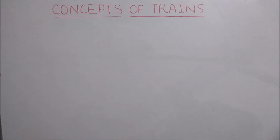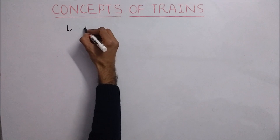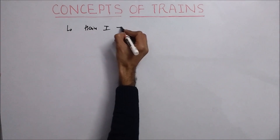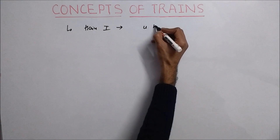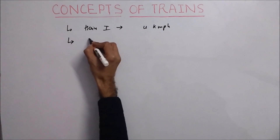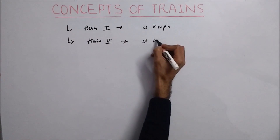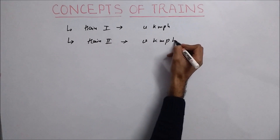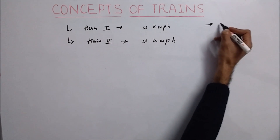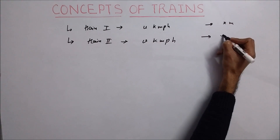Hello, today we will learn about the concepts of trains, which is a subtopic of time and distance questions. First, let us take train one travelling at the rate of u km per hour and train two travelling at v km per hour. Let the length of train one be x meters and the length of train two be y meters.